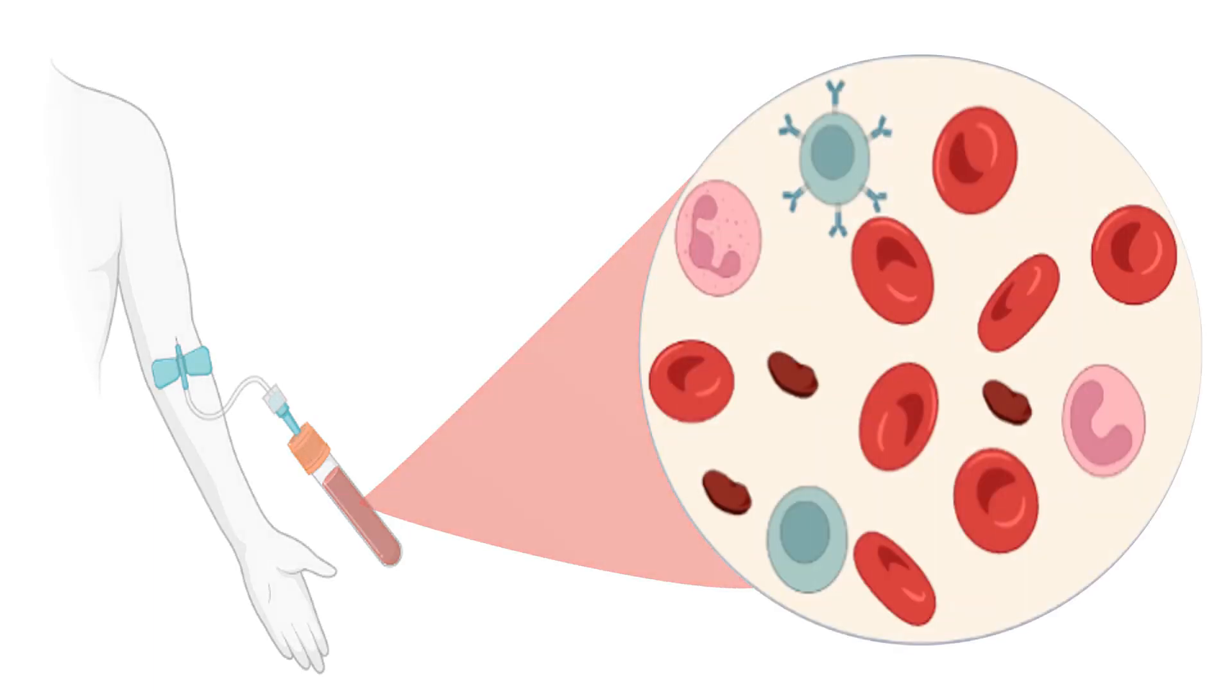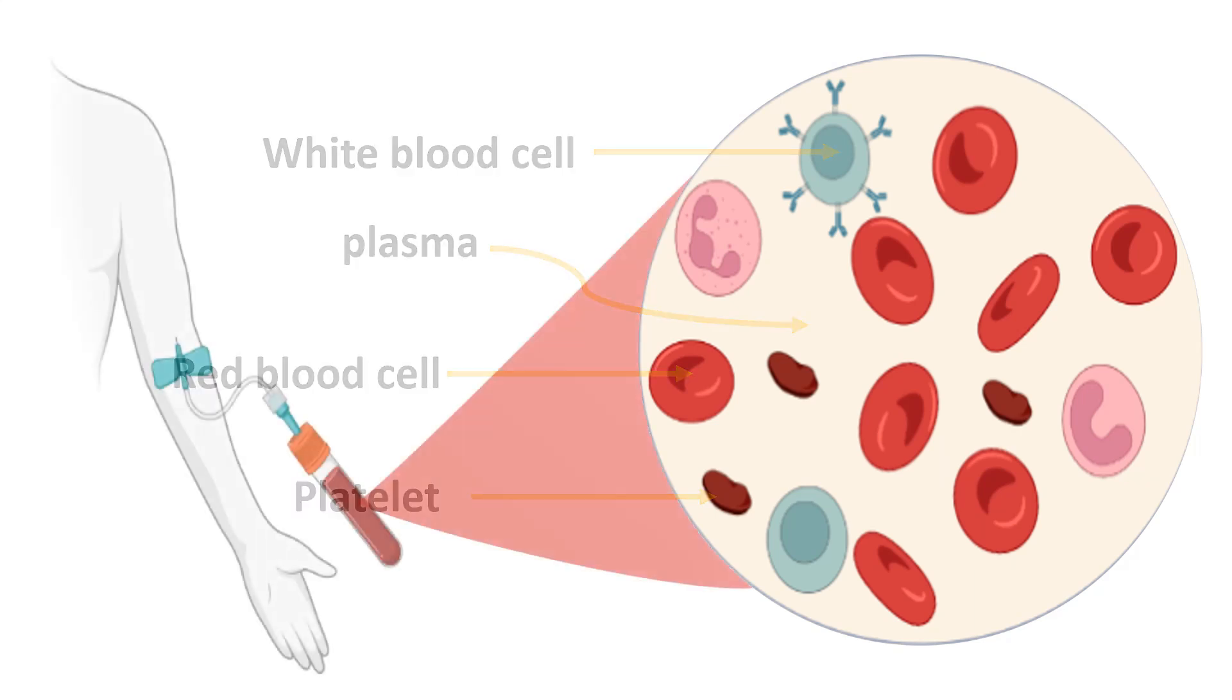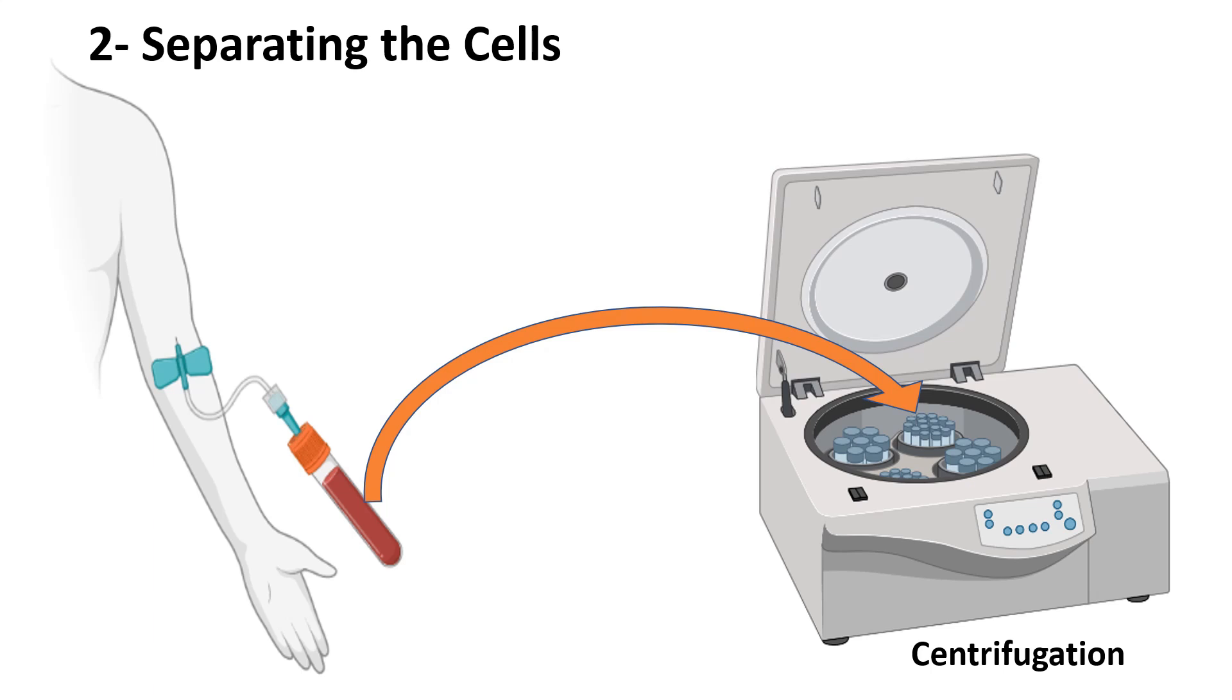A blood sample contains red blood cells, white blood cells, platelets, and plasma. The second step is separating the cells. A karyotype will be done on the white blood cells since they actively divide and contain a nucleus where the chromosomes are located.